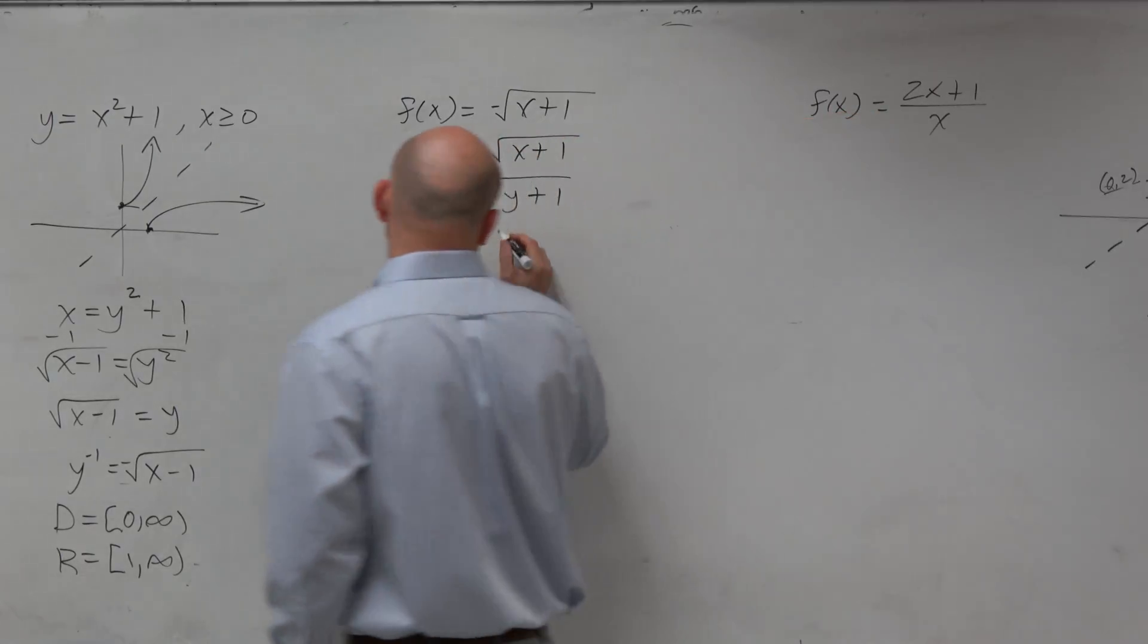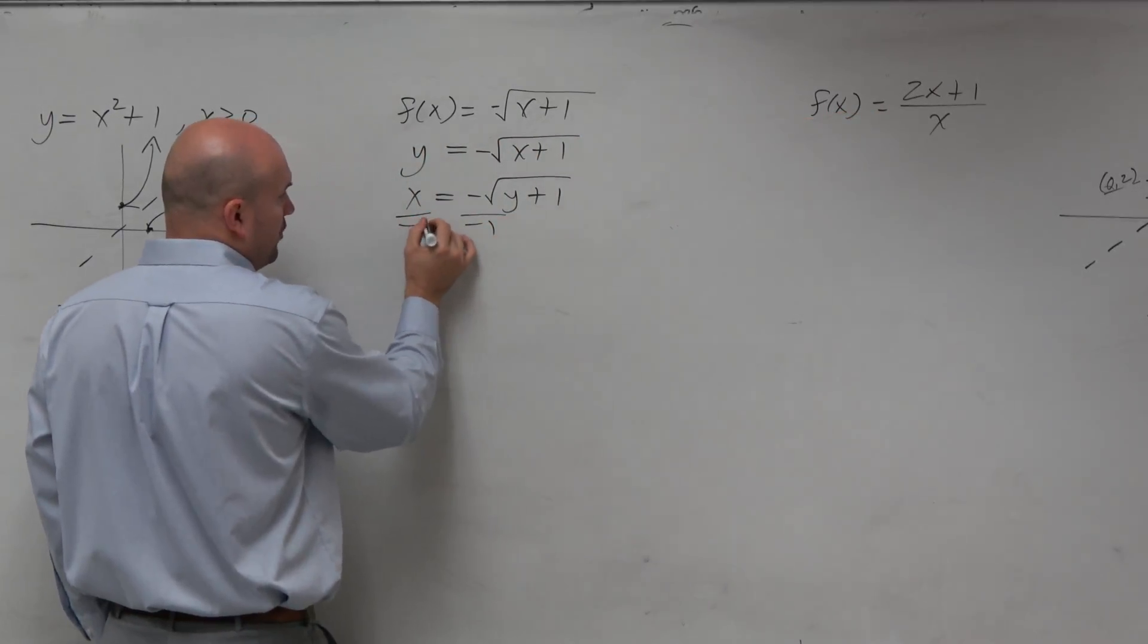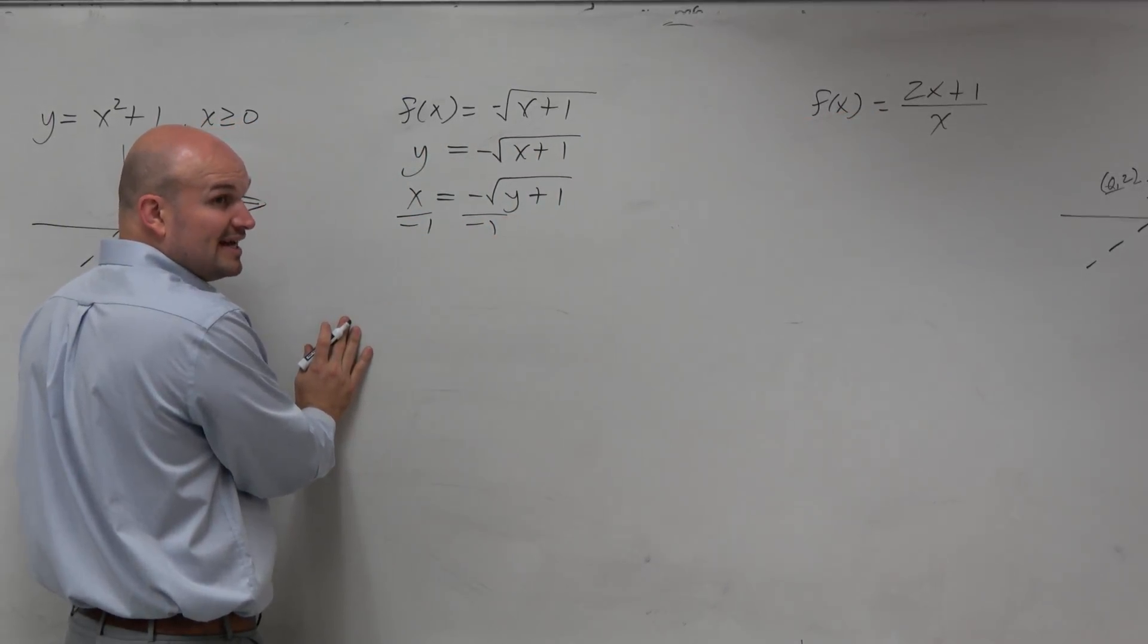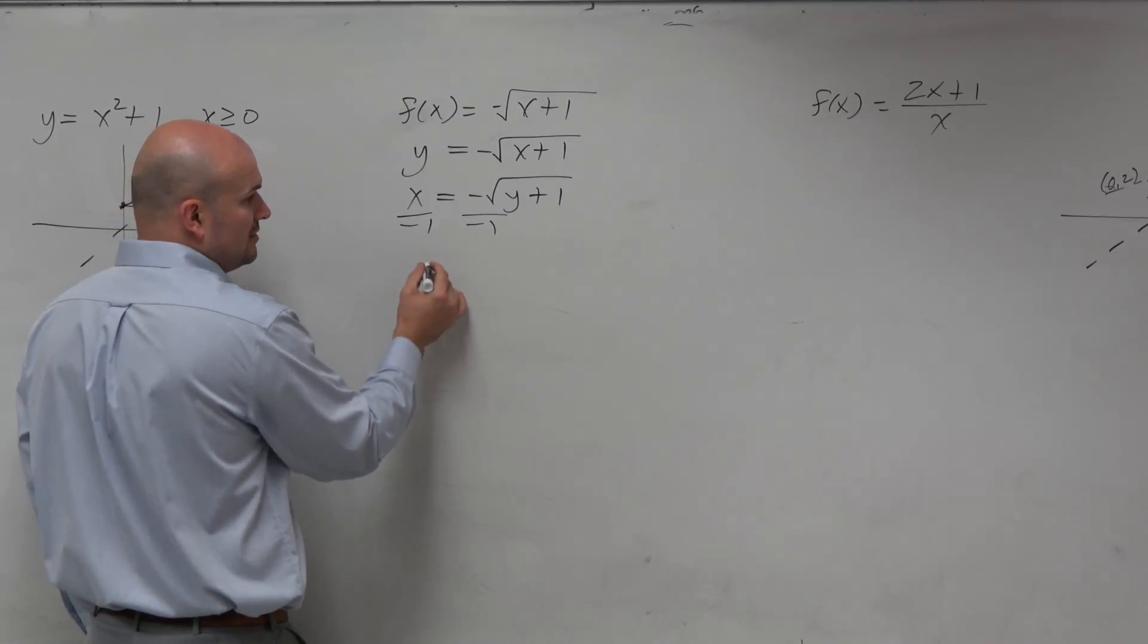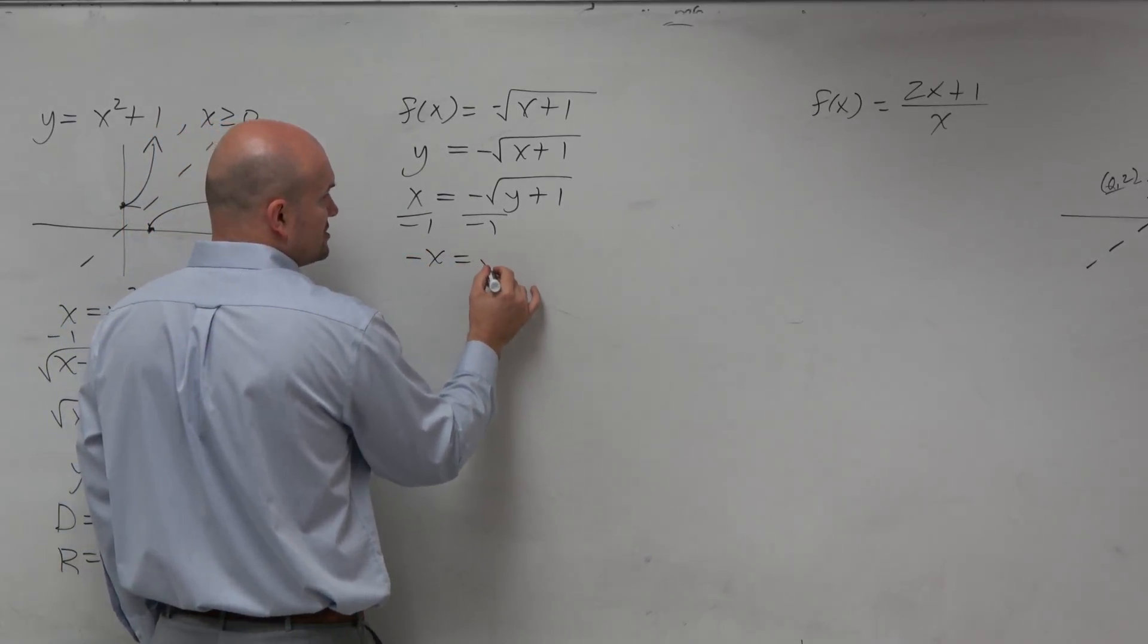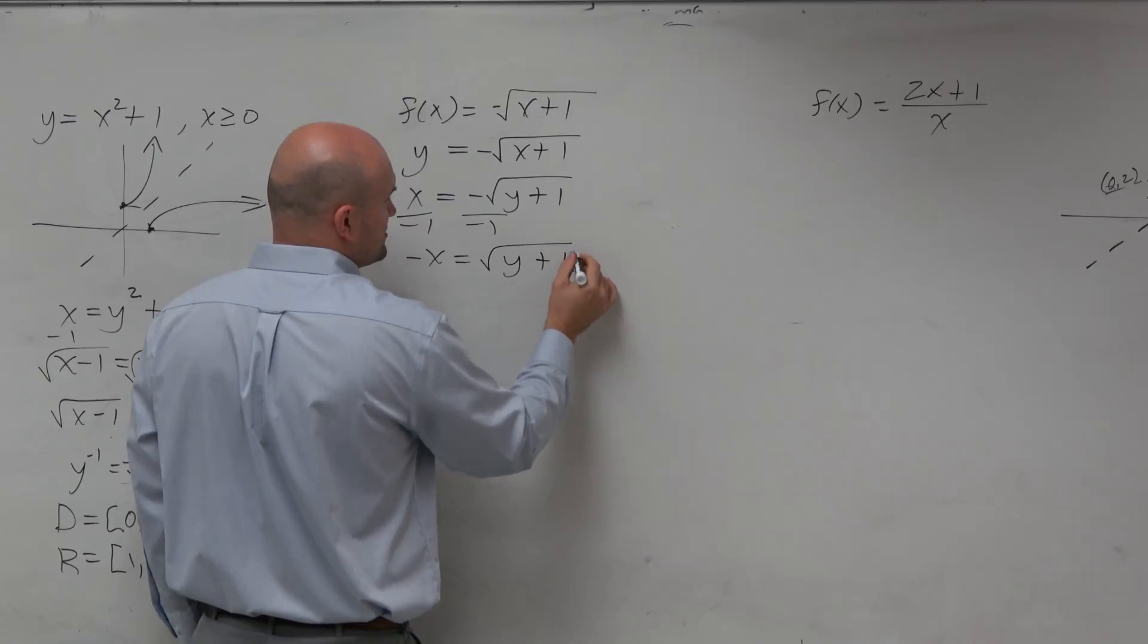So now, to solve for y, the first thing we're going to want to do is divide by a negative 1. You have to divide by negative 1 before you can undo the radical. So now, I have negative x equals square root of y plus 1. Oh, sorry about that.